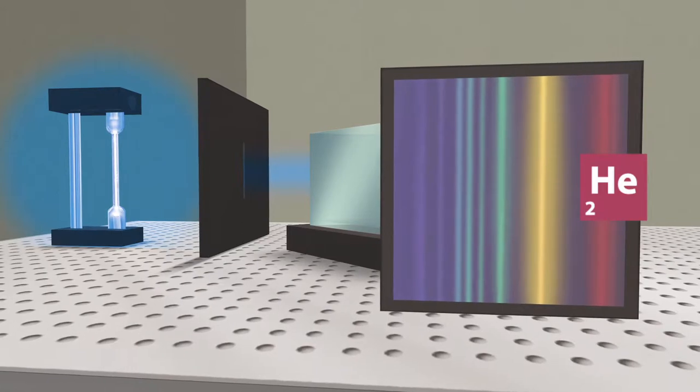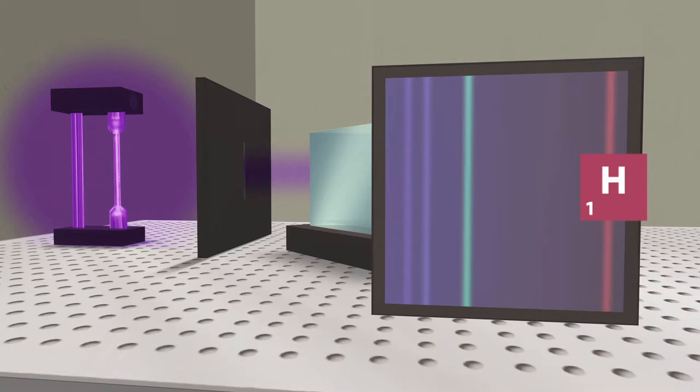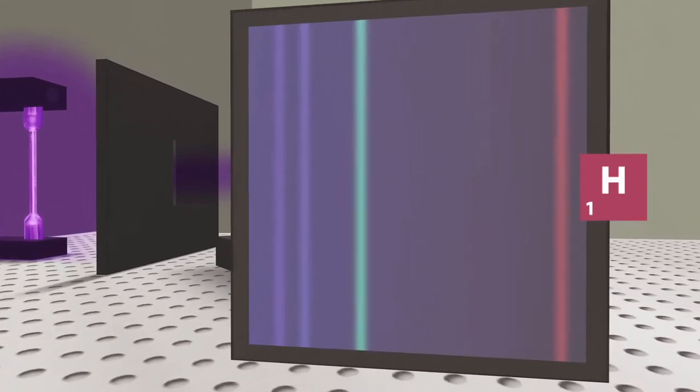For helium, we will obtain a different set of spectral lines. Hydrogen emits only four spectral lines in the visible range.